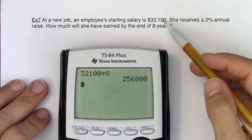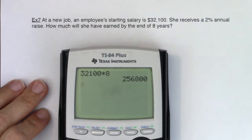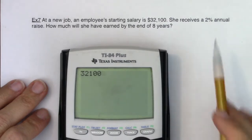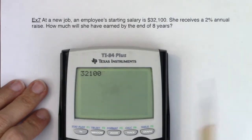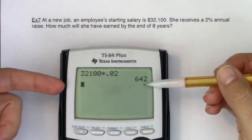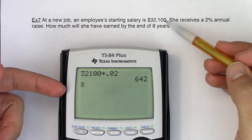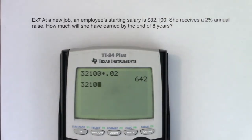Now in terms of the raise, we've dealt with raises before. Let me show you the old school way that we've dealt with raises. You could imagine if a person made $32,100 her first year, and she receives a 2% raise, most of you would multiply by 0.02. And you'd say, on her second year, she's going to make $642 more than her starting salary. And you would take $32,100, add $642 to it.